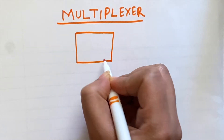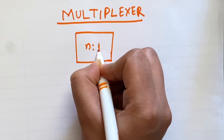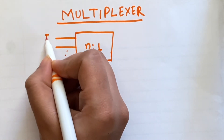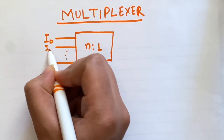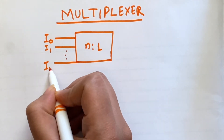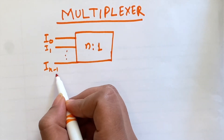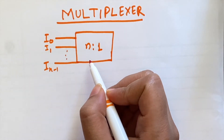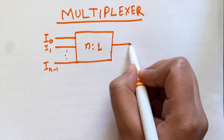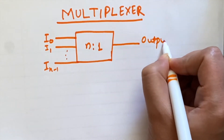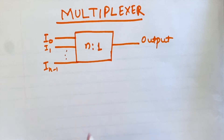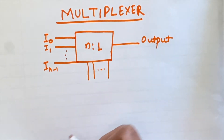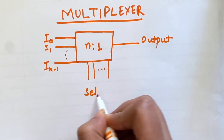Let this be an n-to-1 multiplexer, where n is the number of input lines. The inputs start from I0, I1, up to I(n-1), since it starts from zero. The multiplexer will choose one of those inputs and forward it to a single output line, and it does this with the help of select lines.